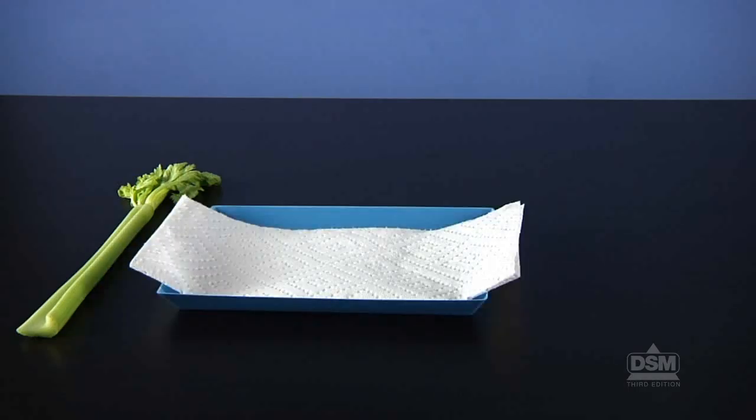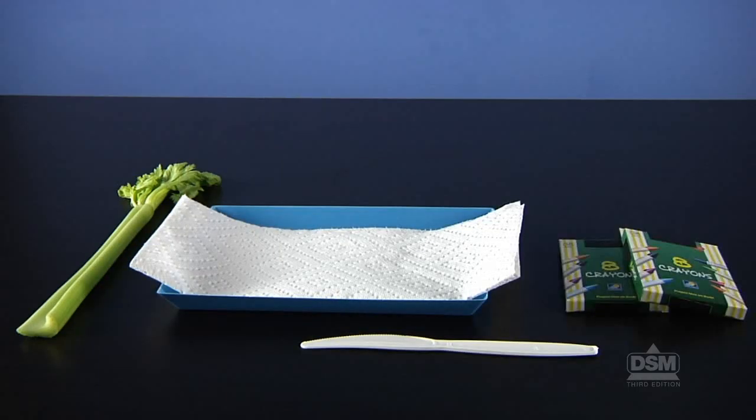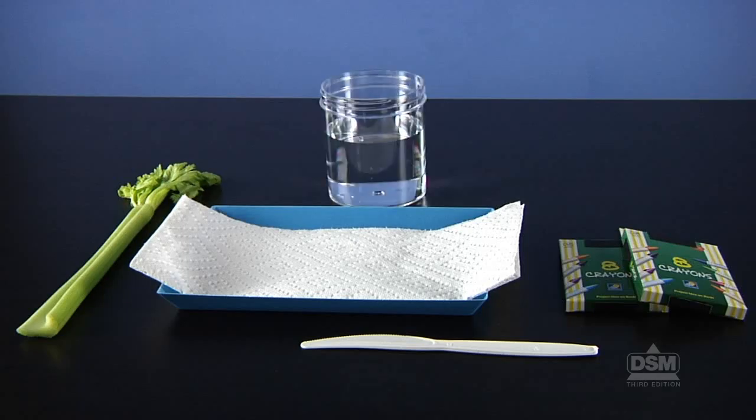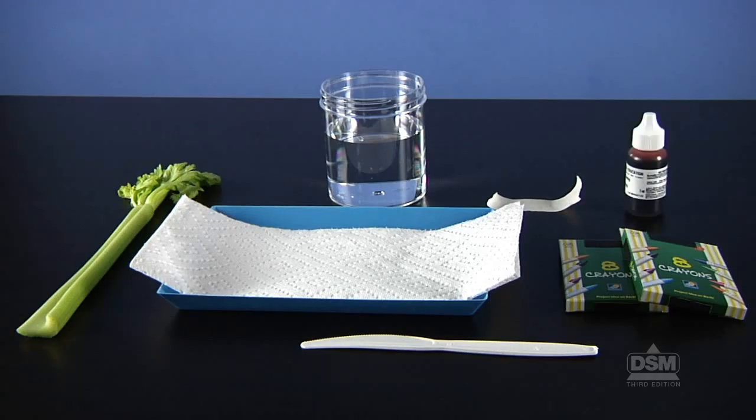Each team of four will need a celery stalk, a plastic tray lined with a paper towel, a plastic knife, two boxes of crayons, a clear plastic jar filled halfway with water, a masking tape label, and several drops of red food coloring.